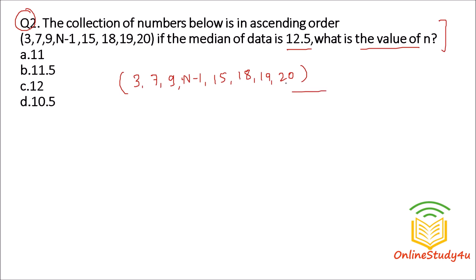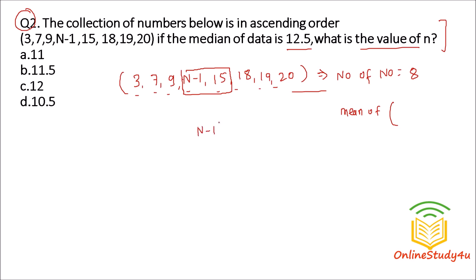The number of numbers is 8. Since the count is even, the median is the mean of the middle two numbers — the 4th and 5th terms. So median equals (n-1 + 15) divided by 2, and the median is given as 12.5. So n-1 plus 15 divided by 2 equals 12.5.